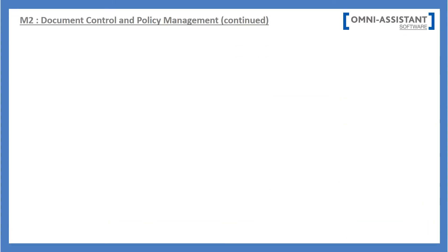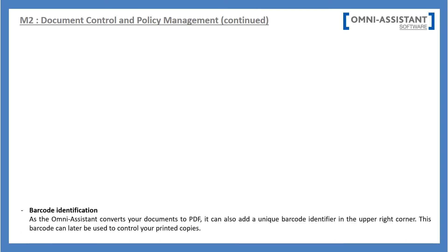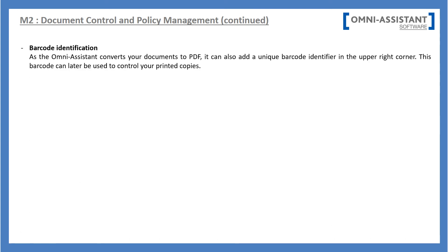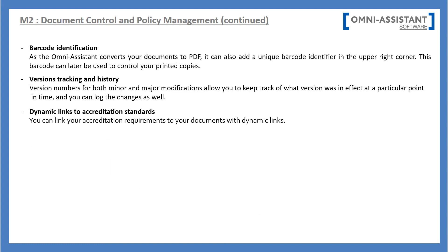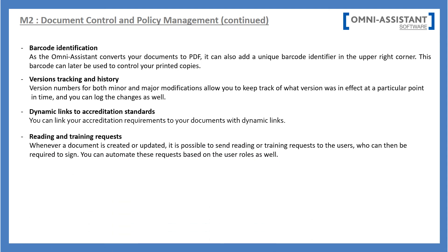Omni Assistant allows you to identify your documents with barcodes, track the full history of your documents as well as every version, dynamically link your documents to accreditation standards and checklists, and request readings, trainings, and evaluations.